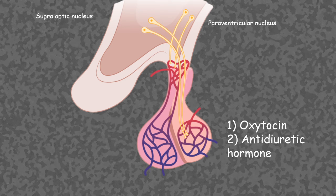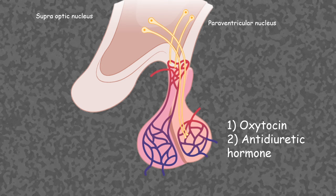The pituitary also has a posterior division. The posterior pituitary receives neuronal input from the paraventricular and supraoptic nuclei. The hormones secreted from the posterior pituitary are oxytocin and antidiuretic hormone, which will be covered in a separate video.